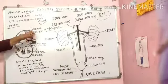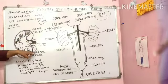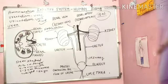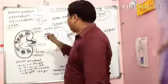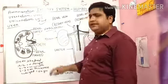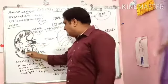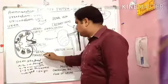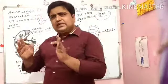The internal structure of the kidney is made up of renal pyramids and calyx. The outer surface of the kidney is called the renal cortex, the middle part is called the calyx, and the pyramidal internal structure is called the renal pyramids.